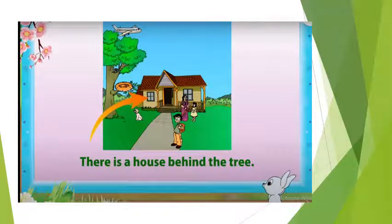There is a house behind the tree. So you can see that there is a house behind the tree. Behind is a preposition and it is telling us the position of the house.